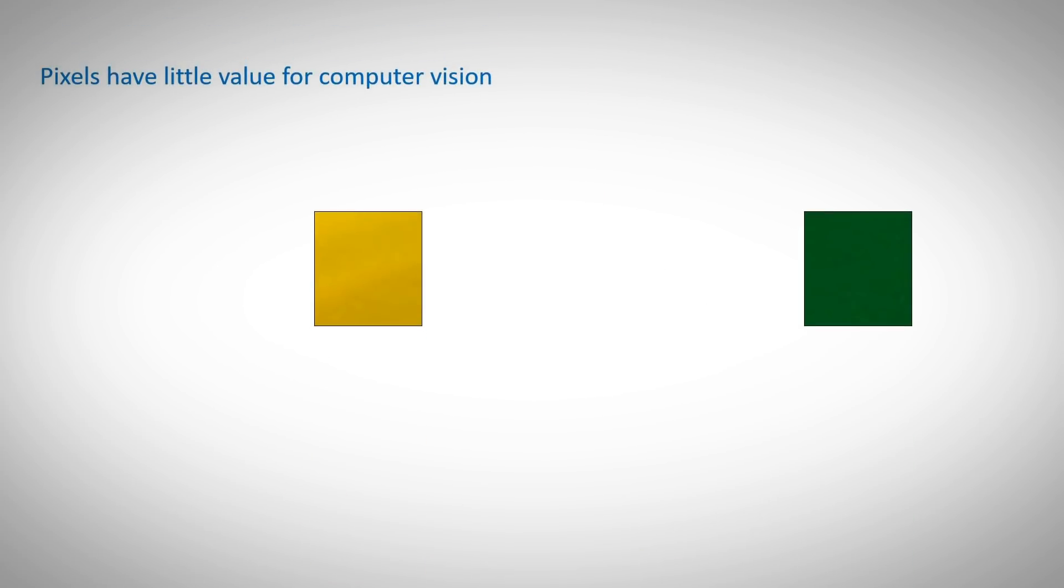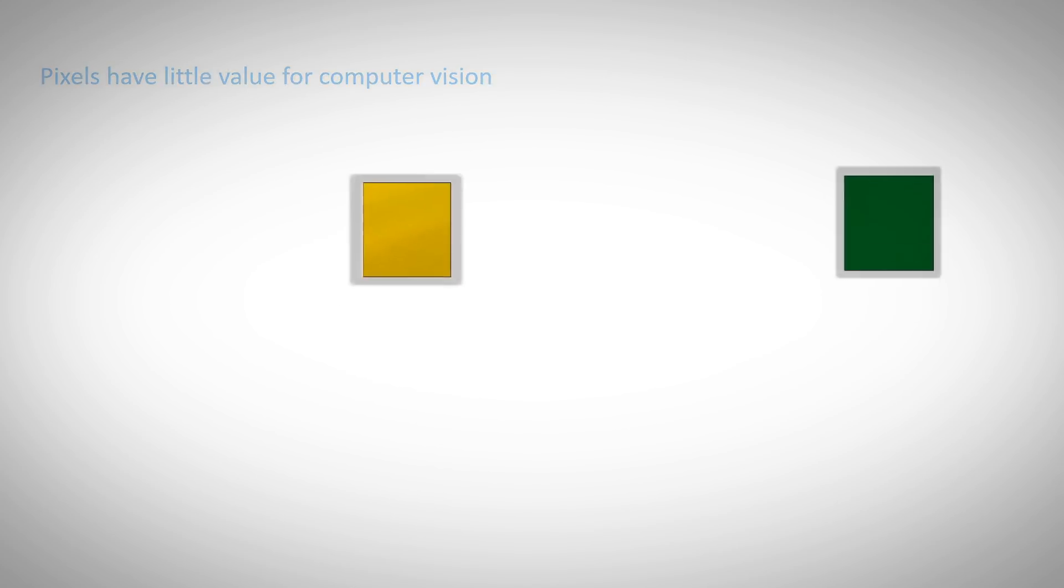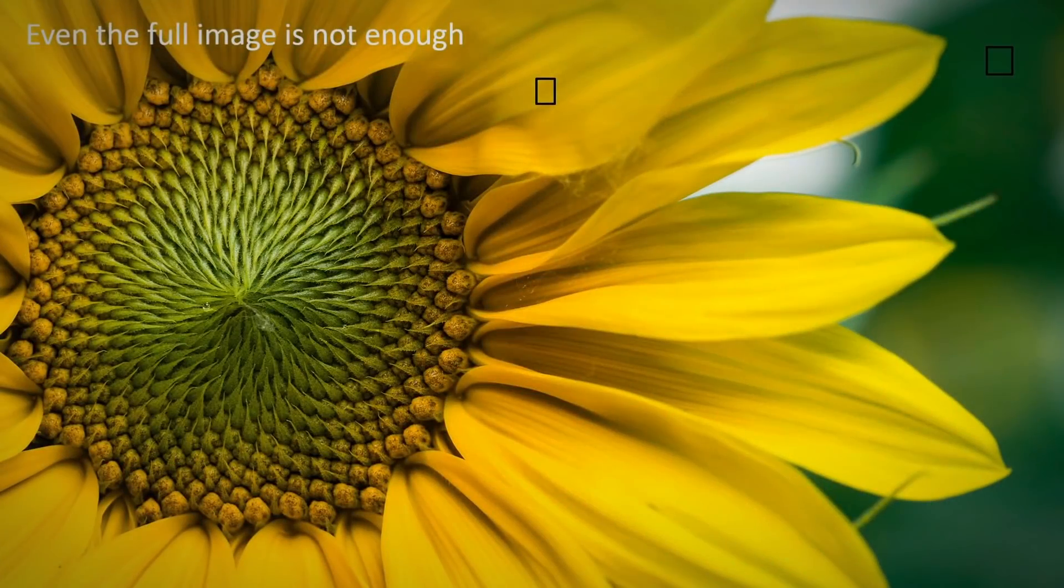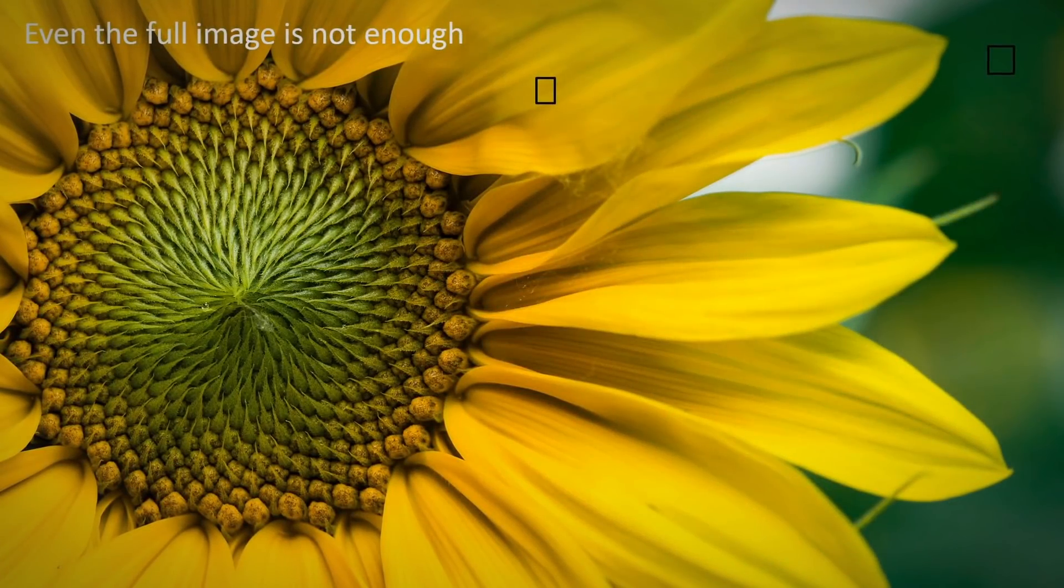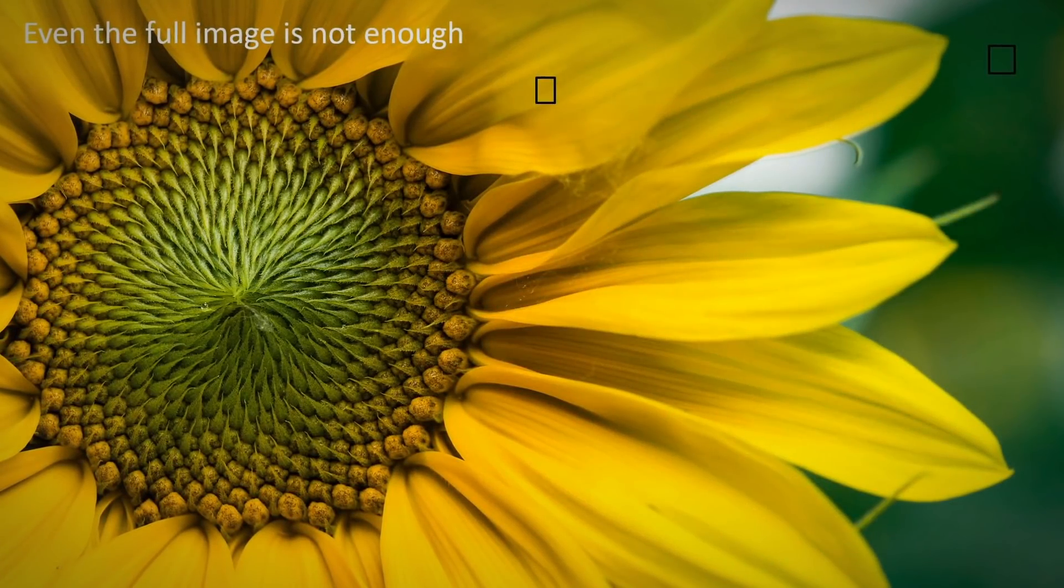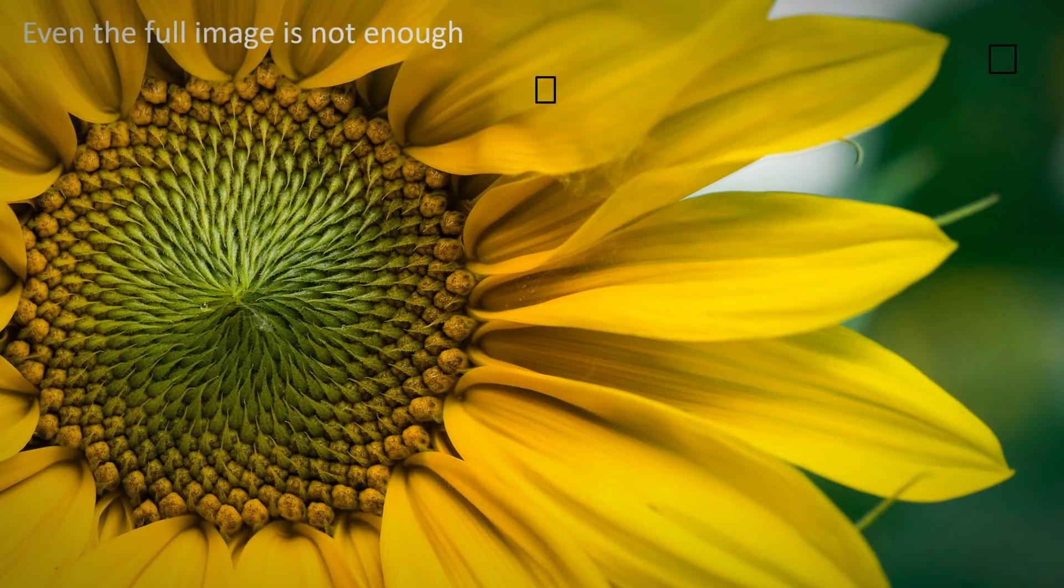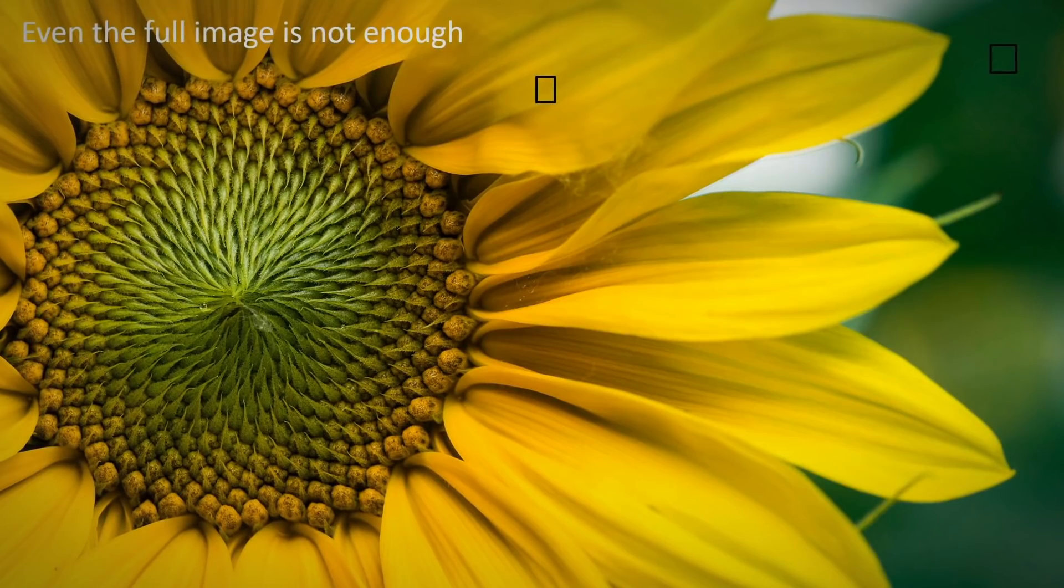Before talking about audio, a quick reminder on image processing. Here are two pixels of an image. These pixels cannot help us much with understanding the full image. Even if we have all the pixels, it is not enough. Because if we move the image by one pixel to any side, the way the computer represents this image is totally different.